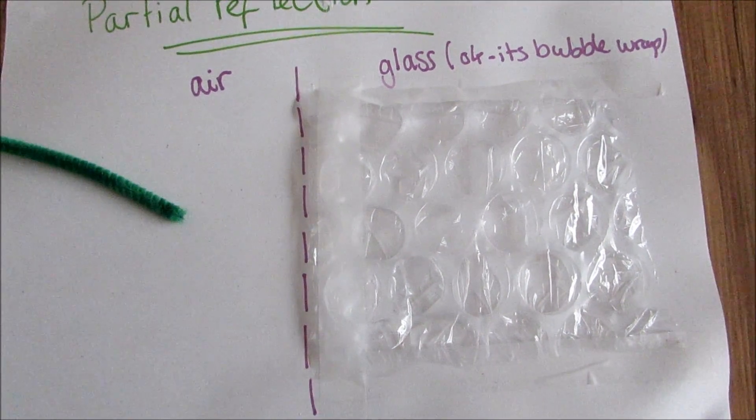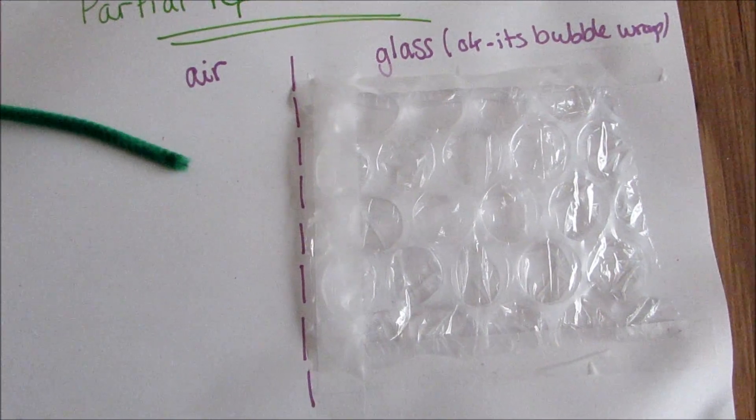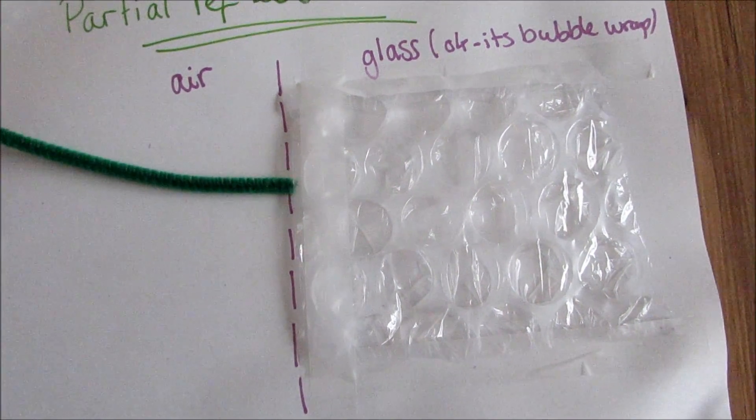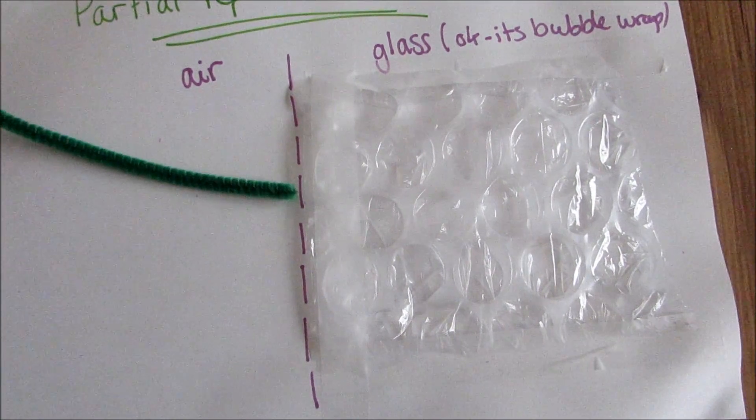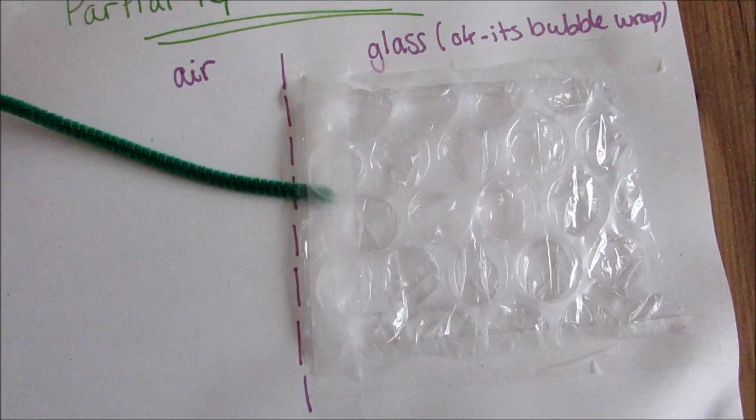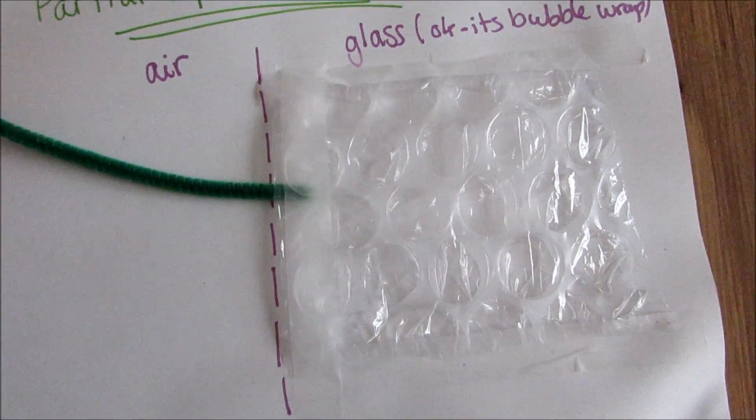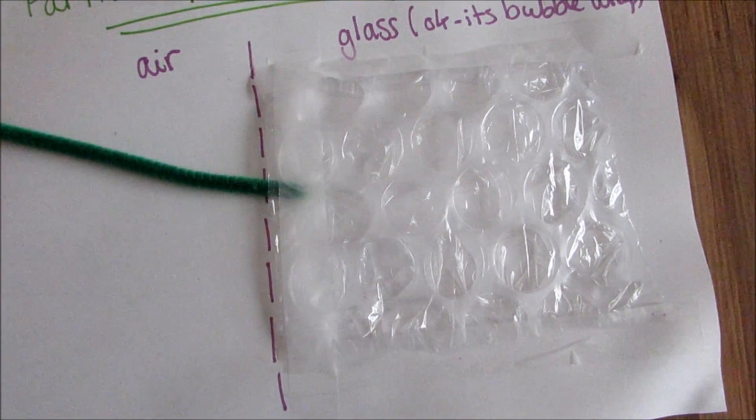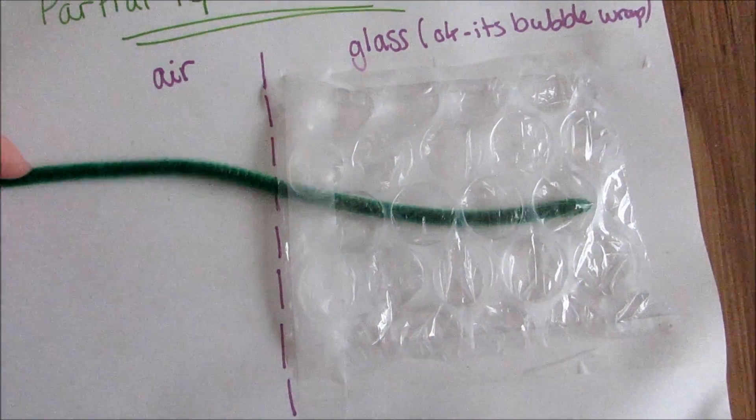And this is the glass being modeled by a bit of bubble wrap. And the sound is being modeled by my pipe cleaner. So the sound comes traveling along here. And then when it gets to the boundary between the air and the glass, you'll notice it's much harder for the pipe cleaner, or the ultrasound, to travel through.